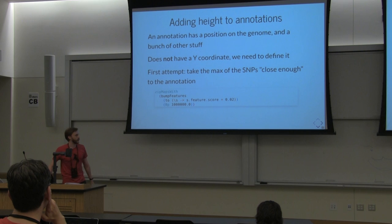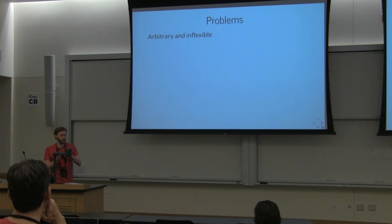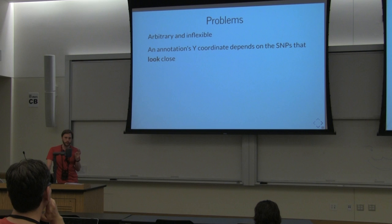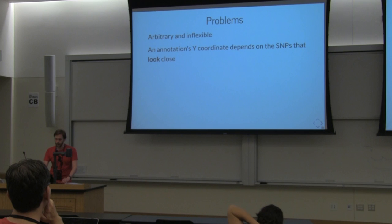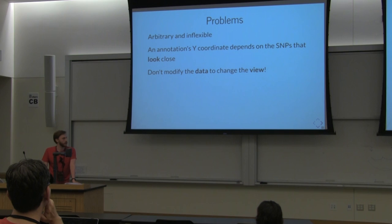Some of the problems with that: it's arbitrary and inflexible. Why should the radius be one million base pairs? Why should it look at the score of another dataset and add that to this dataset? The y-coordinate of an annotation actually depends on the SNPs that look close, not just within some arbitrary base pair distance. And as I said earlier, you don't want to modify the data to change the view — that's nonsensical.